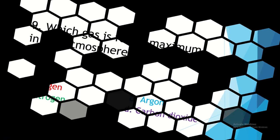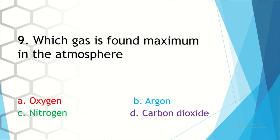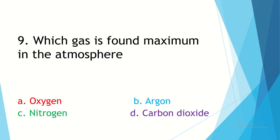This is the second last question. Which gas is found maximum in the atmosphere? Option A, oxygen. Option B, argon. Option C, nitrogen. Option D, carbon dioxide. Your time starts now.